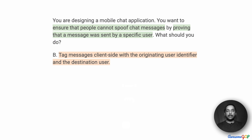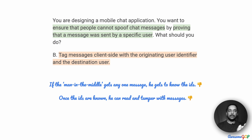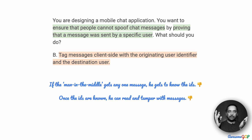Option B suggests tagging messages client-side with the originating user identifier and the destination user identifier. The problem with this is that if the man in the middle intercepts any one message, they now know both the sender ID and the receiver ID. They can then create malicious messages using those same IDs and send them, which is definitely not what we want. If the message itself contains the identifier or shared key, it's definitely a problem — we eliminate option B.